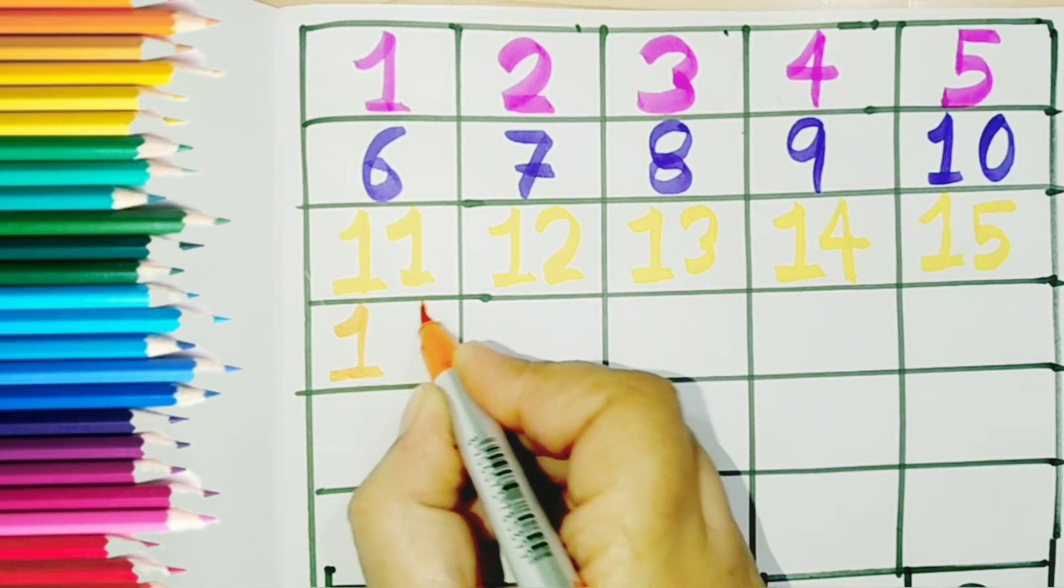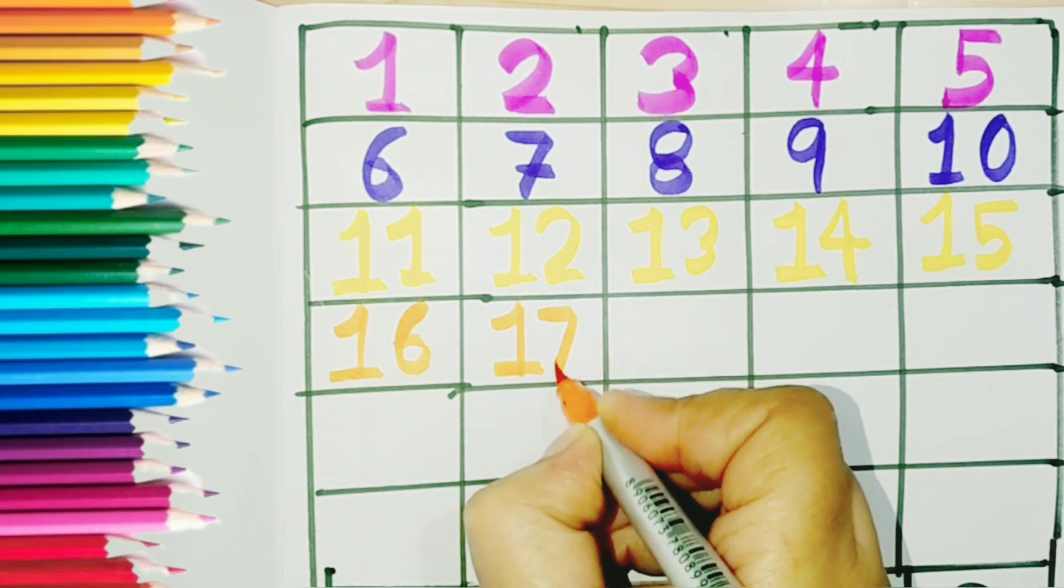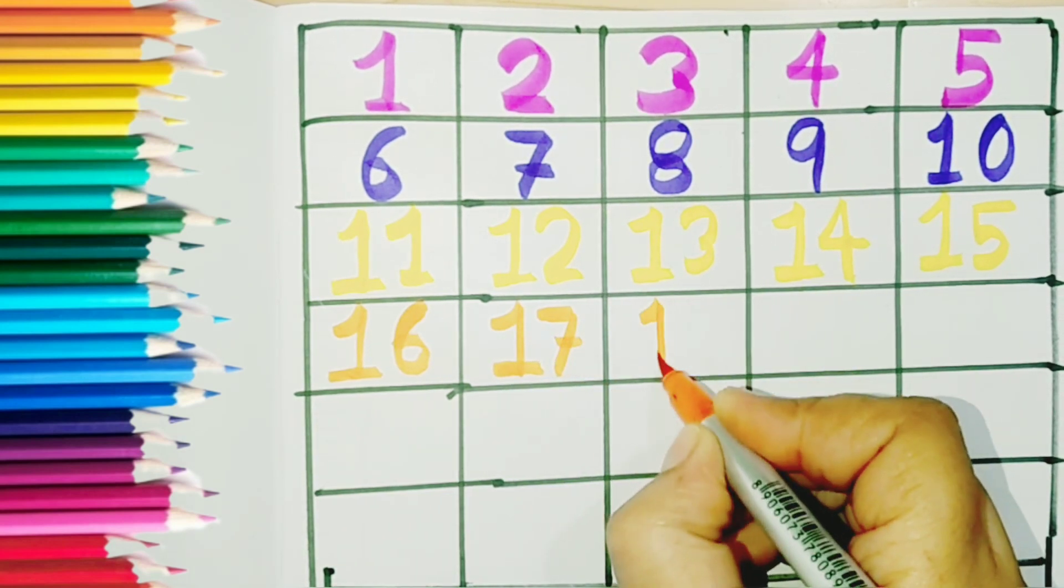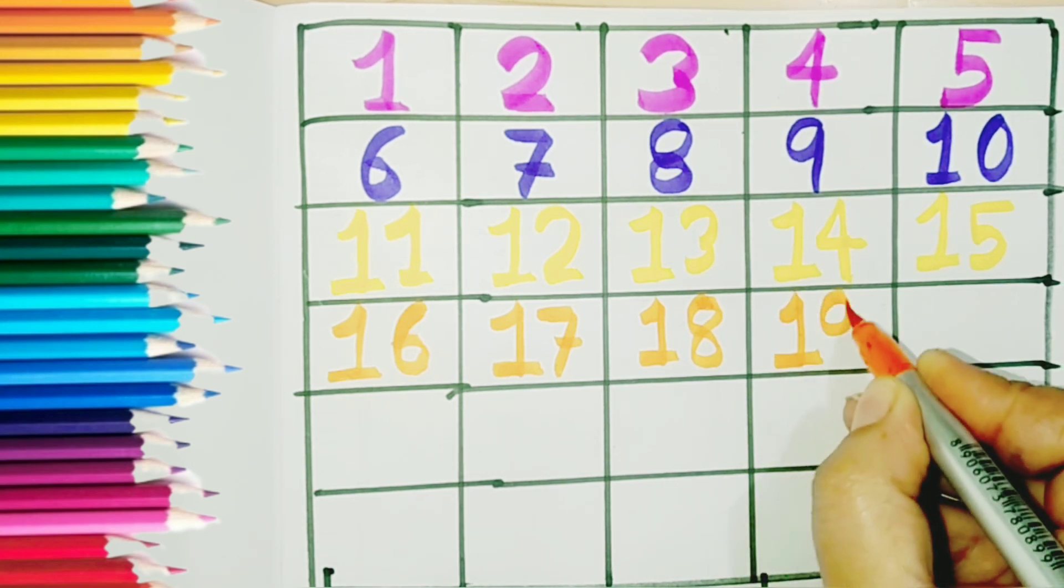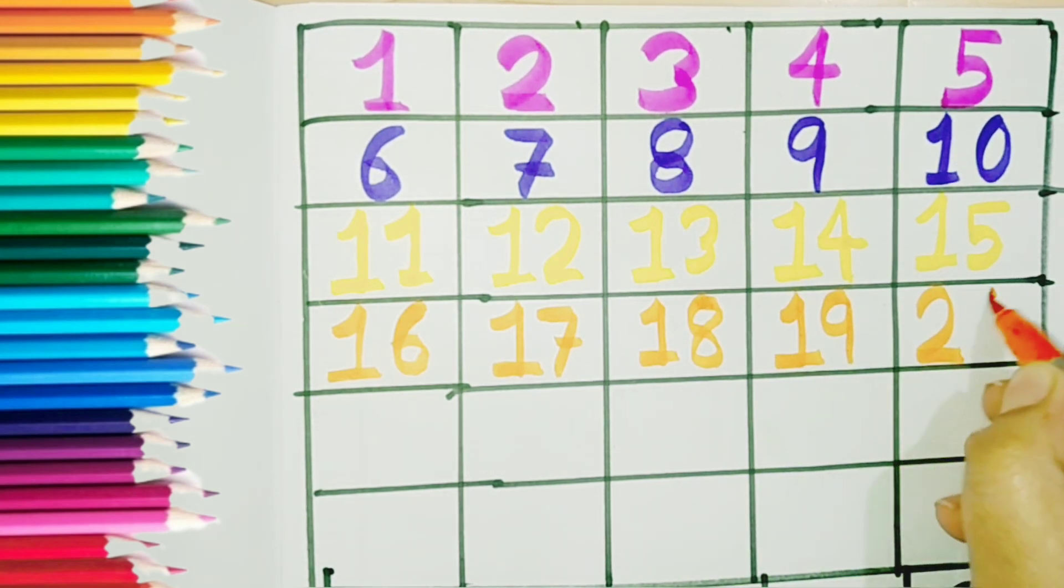One six, sixteen. One seven, seventeen. One eight, eighteen. One nine, nineteen. Two zero, twenty.